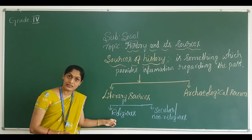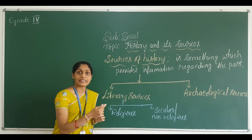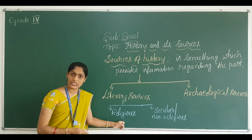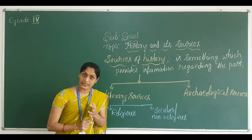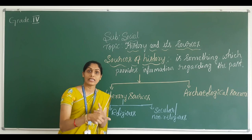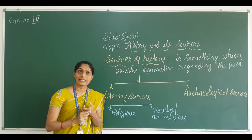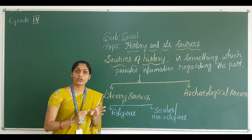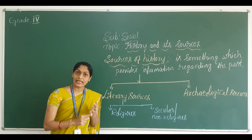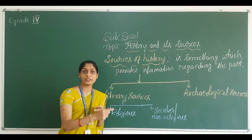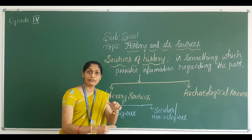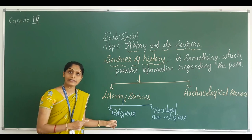Religious means writings which deal with a particular religion. That sources we call as religious. For example, the four Vedas, the Ramayana, the Mahabharata — these are all related to our Hindu religion. The same way, the Bible is related to Christianity. The Quran is related to the Islamic or Muslim religion. The Jatakas and the Tripitakas are related to Buddhism. Angas and the Agamas are related to Jainism. That all the information we call as religious sources.